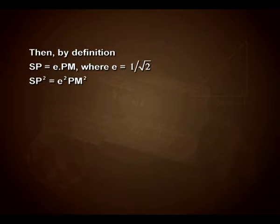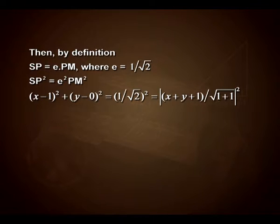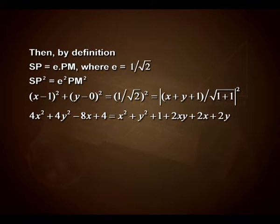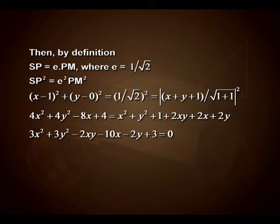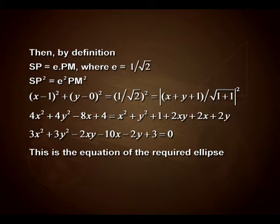On squaring, SP² = E²·PM². Using the distance formula, we write (x−1)² + (y−0)² = (1/√2)² · [(x + y + 1)/√(1+1)]². This gives 4x² + 4y² − 8x + 4 = x² + y² + 1 + 2xy + 2x + 2y, which simplifies to 3x² + 3y² − 2xy − 10x − 2y + 3 = 0. This is the equation of the required ellipse.